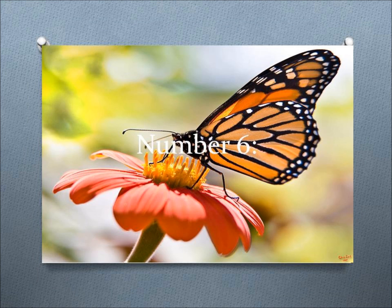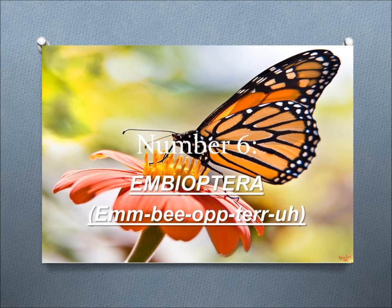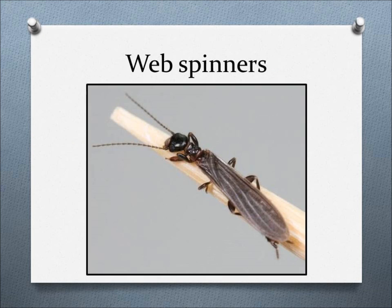Number 6, Embioptera. This order includes web spinners, that use the silk glands located on their enlarged forelimbs to weave silk tunnels and chambers on a variety of places like on rocks, the barks of trees, or in leaf litter.